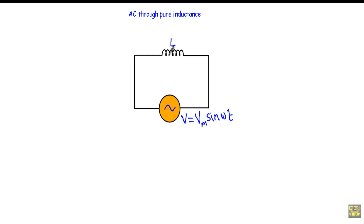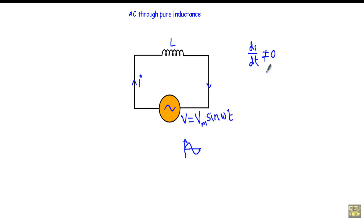Now consider a pure inductor with inductance L connected to an alternating voltage source V equal to Vm sine omega t. Since V is a pure sine wave, it will create an alternating current I flowing in this circuit. As we have alternating voltage, the change of current dI/dt in this circuit will not be equal to zero. When the change of current through an inductor is not equal to zero, it develops a back EMF which opposes the main supply voltage, denoted as VL, and VL is given by L into dI/dt.